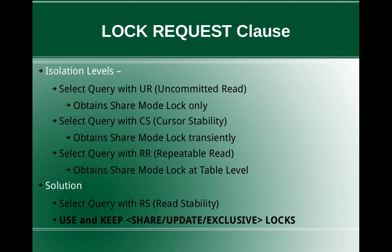With cursor stability, it's like a cursor getting positioned from one row to the next. When the query is on the first row the lock is acquired, and when the cursor moves to the second row the lock on the first row is released. The third isolation level is repeatable read, which also obtains a shared mode lock at the table level. All three of these isolation levels, when used with a select query, will obtain only a shared lock — not an exclusive lock or an update lock.